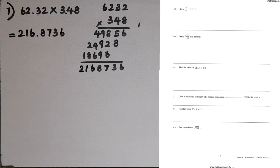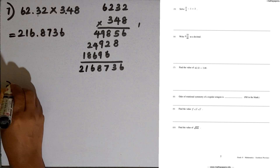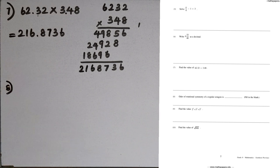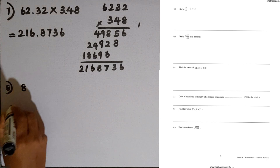Question number 8: find the order of rotational symmetry of a regular octagon. In a regular octagon, we have 8 lines of symmetry, so the order of rotational symmetry is also 8.